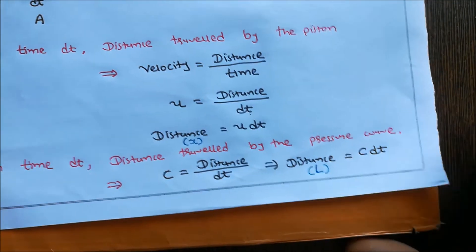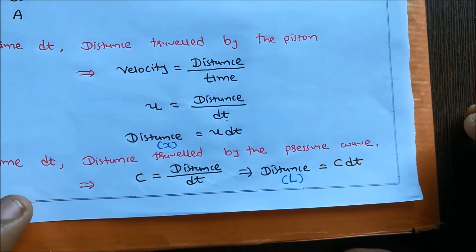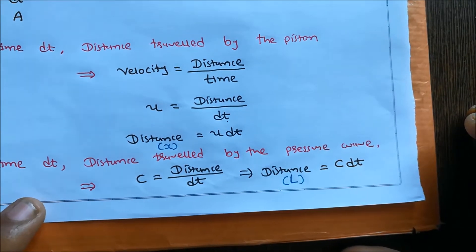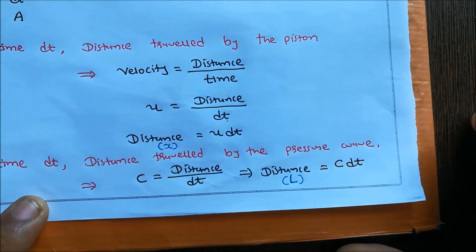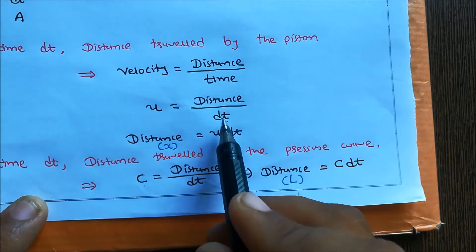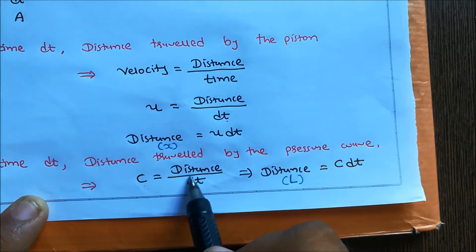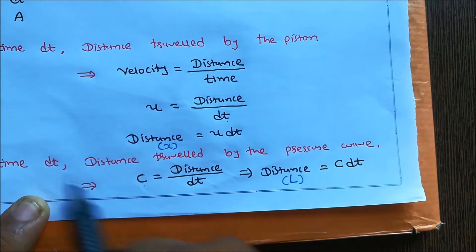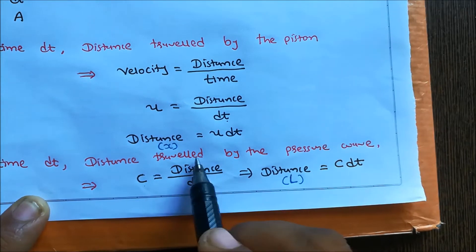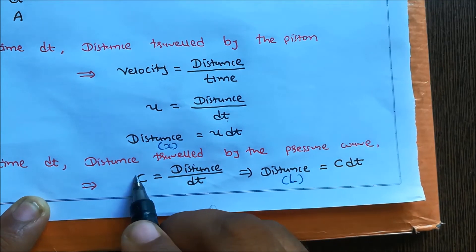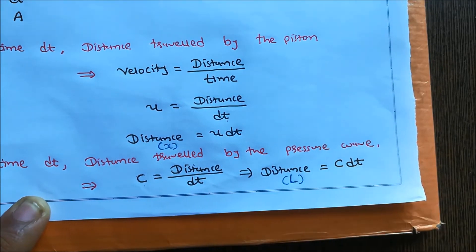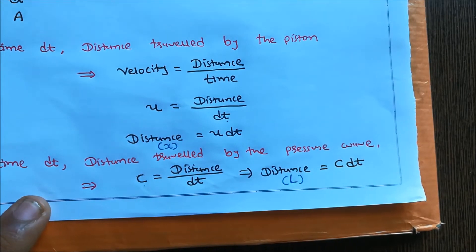Similarly, we find the distance travelled by the pressure wave in time dt. Velocity equals distance per time, and the velocity of the pressure wave or sound wave is C. So C equals distance per time interval dt. Therefore, the distance travelled by the pressure wave is l, and l equals C·dt.